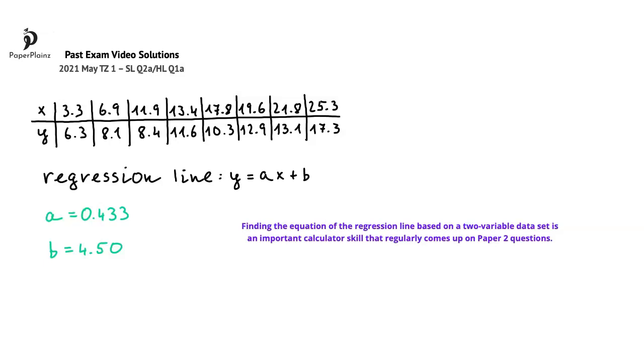My second tip is a more general one. It is that unless stated otherwise in a question, all numerical answers should be given exactly or rounded to 3 significant figures. Here, for instance, we rounded the value of a and the value of b to 3 significant figures.